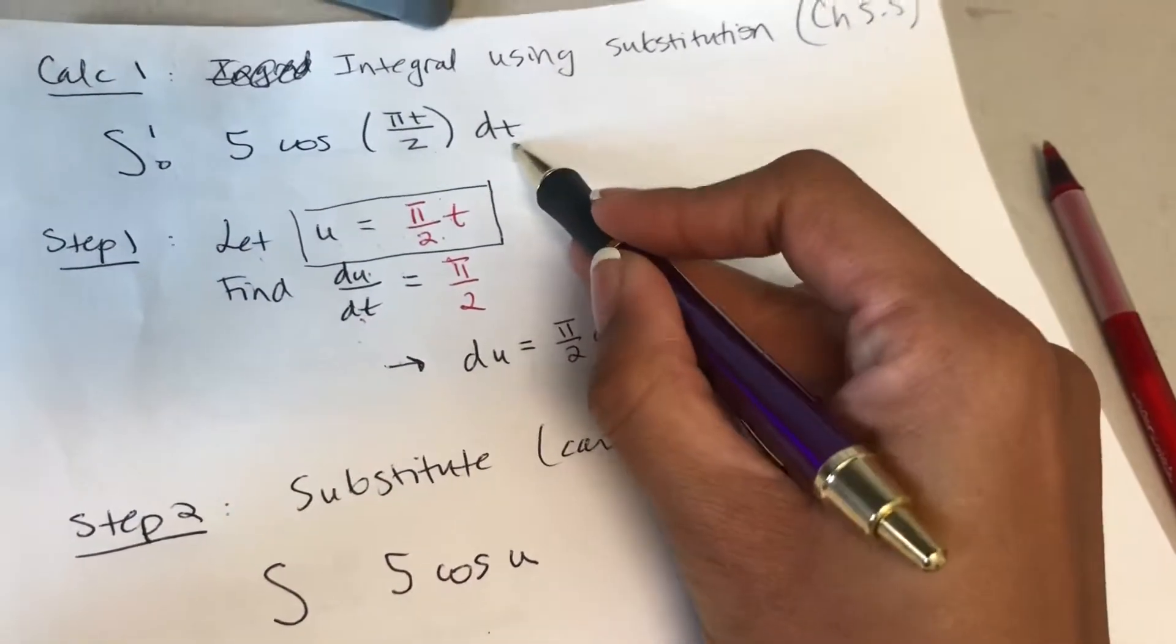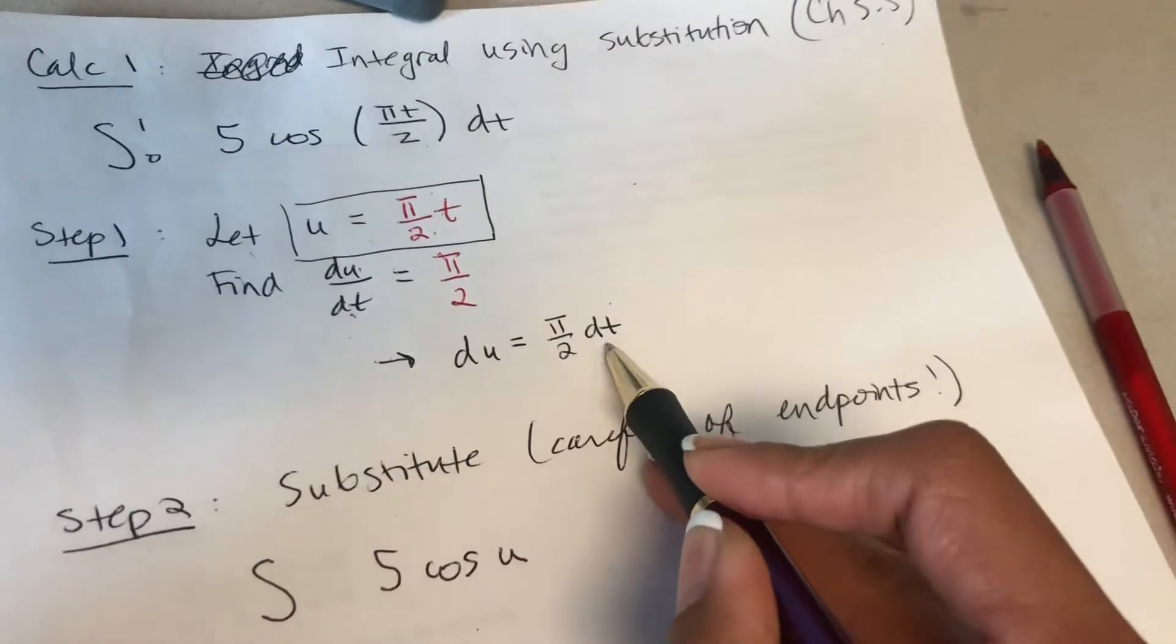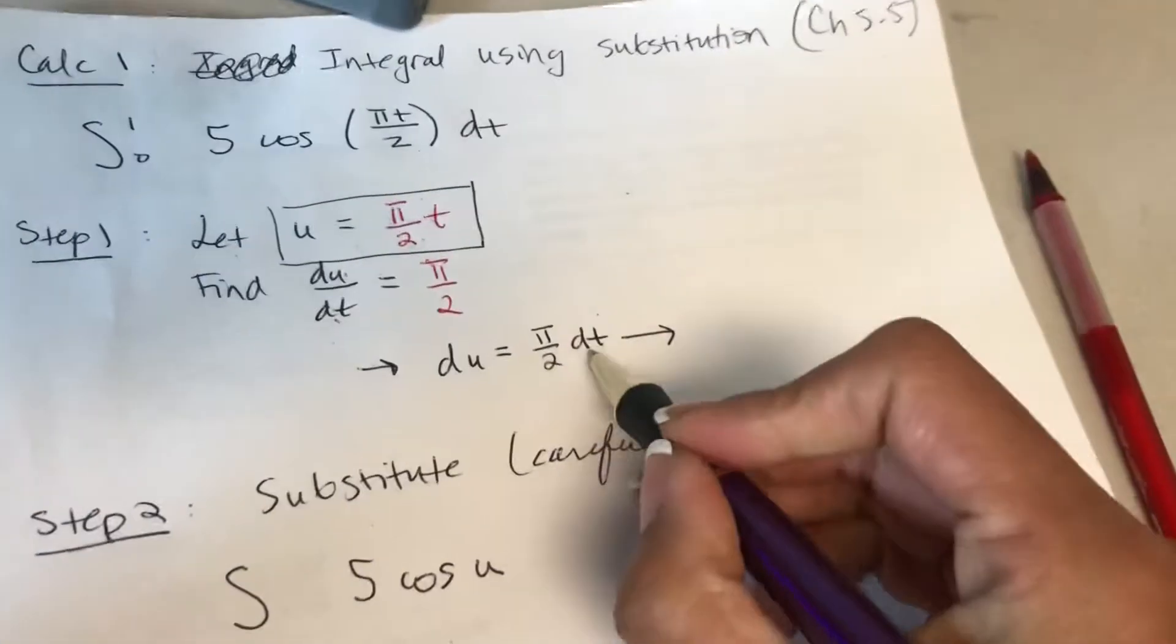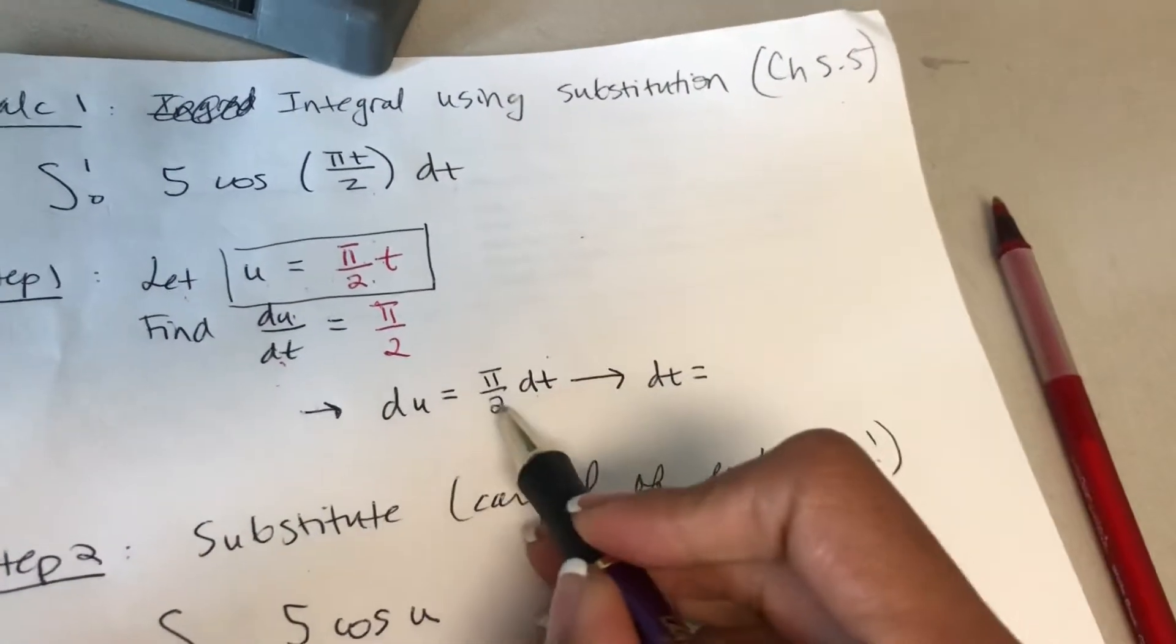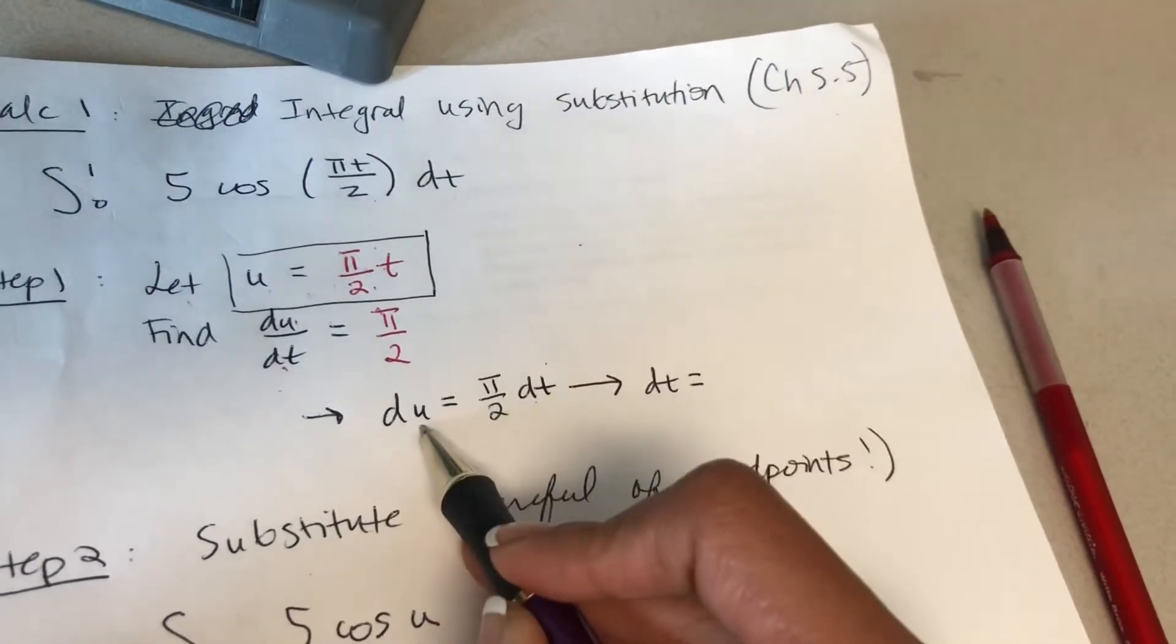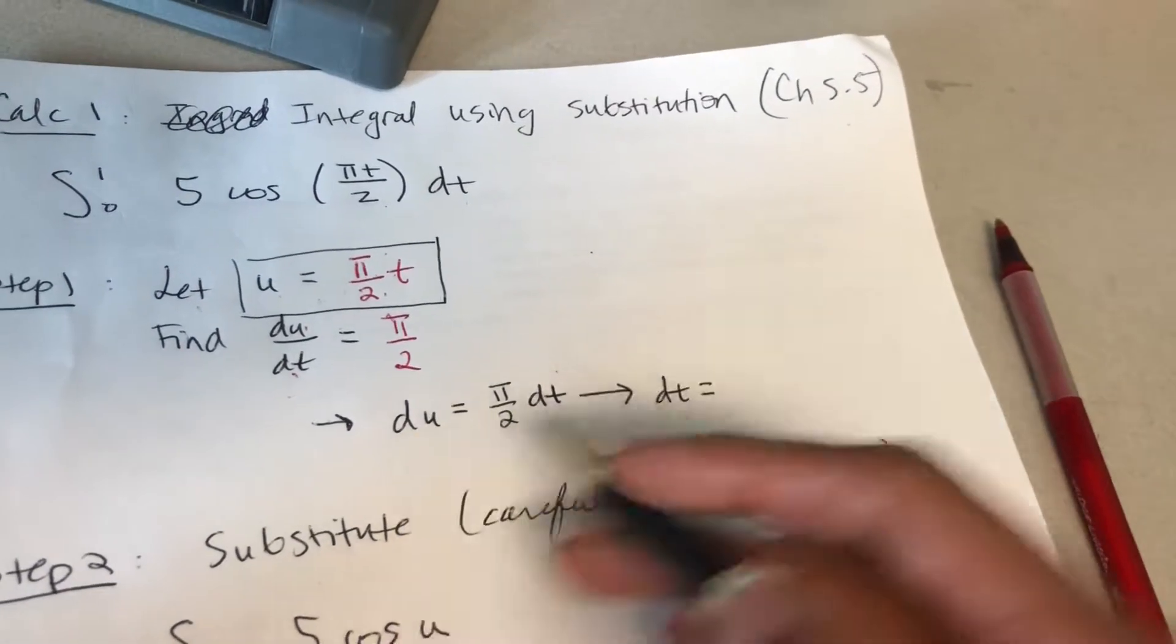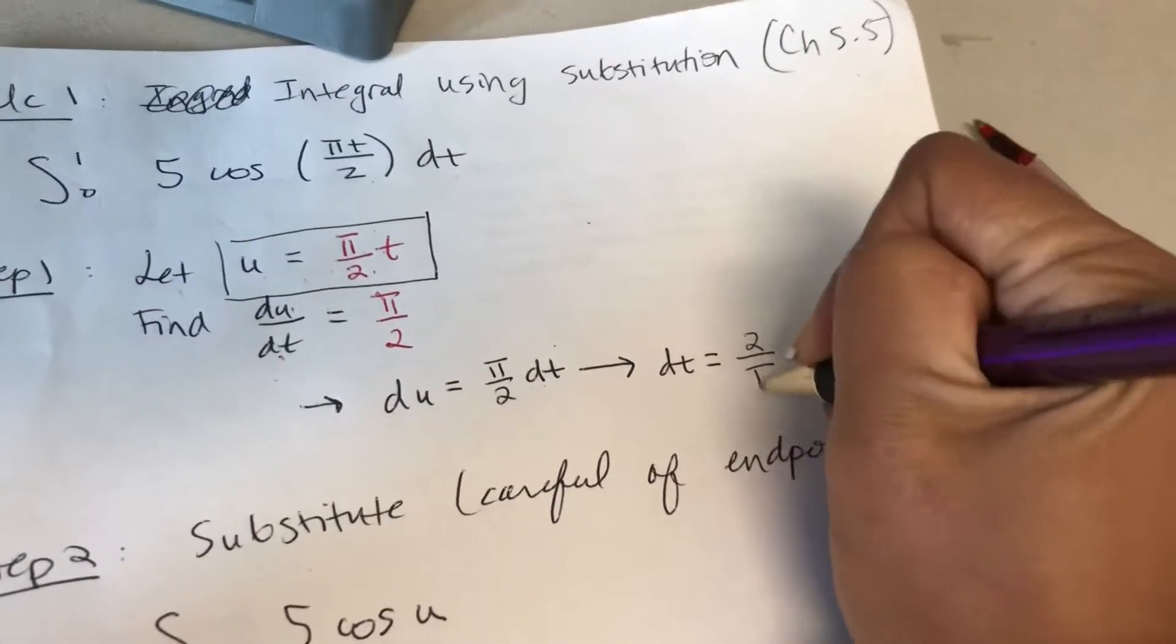Now dt, what do I substitute dt with? I'm going to manipulate this portion and write dt as equal to something. Divide both sides by pi over 2. When you divide by a fraction, it's the same thing as multiplying by the reciprocal. So I get dt is equal to 2 over pi du.